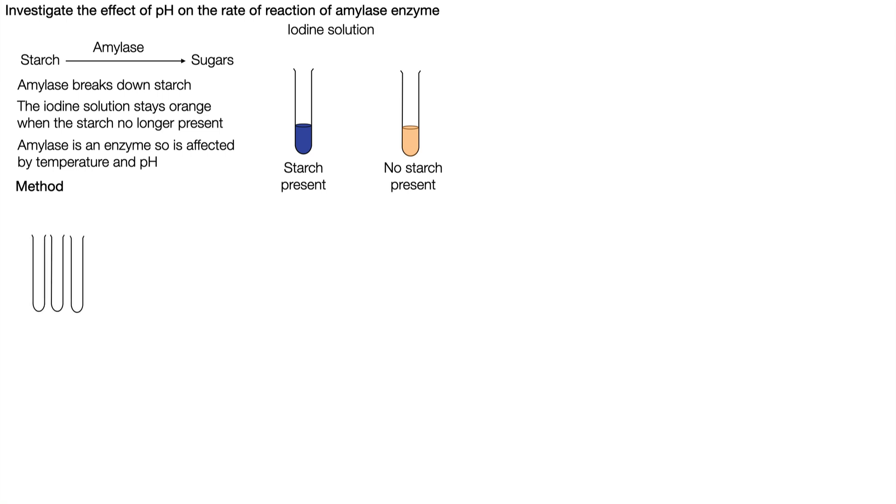Here we have three test tubes and we have three solutions. The first one is starch solution. The second one is what's called a buffer solution, and the buffer solution has the job of setting the pH. And then we have our amylase solution.